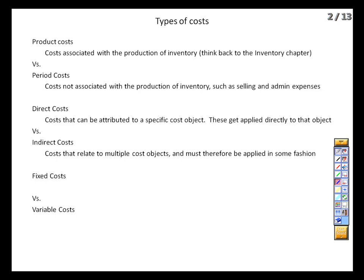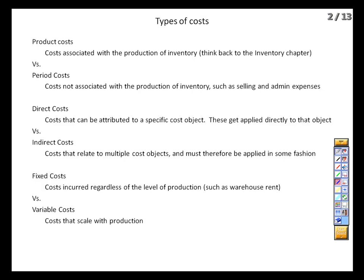The last set is fixed versus variable. Fixed costs do not scale with production within reason — if we're renting a warehouse, the rent is the same whether we produce zero, a thousand, or two thousand units. Variable costs scale with production: if we want to make more tables, we need more wood, more metal, and more labor. This distinction is only valid within what we call the relevant range — our current productive capacity without adding new capacity. If we want to make a hundred thousand units instead of two thousand, that little warehouse we're renting won't be big enough, so the fixed cost is fixed only within reason.